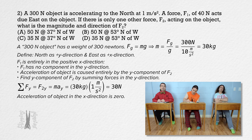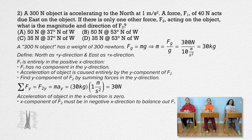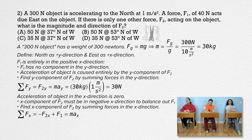We also know the acceleration of the object in the x direction is zero. Therefore, the x component of force two must be in the negative x direction to balance out force one. Summing forces in the x direction: the net force equals negative force two in x plus force one, and since there's no x acceleration, the right-hand side equals zero. Therefore, force two in the x direction equals force one, which is 40 newtons.